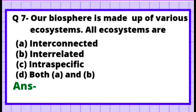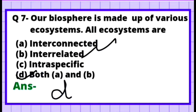Question 7: Biosphere is made up of various ecosystems. All ecosystems are — Option A: Interconnected, Option B: Interrelated, Option C: Interspecific, Option D: Both A and B. Since ecosystems are both interconnected and interrelated, the correct answer is Option D — Both A and B.